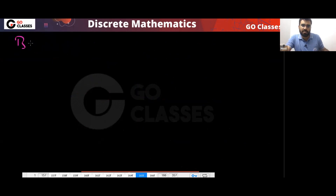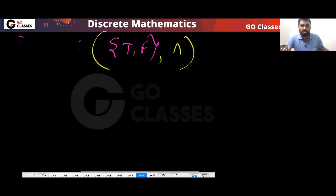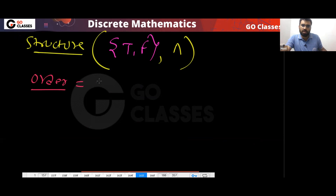For example, if your base set is {true, false}, then the order of this structure is two — because the order means the number of elements in the base set, i.e., the cardinality of the base set.